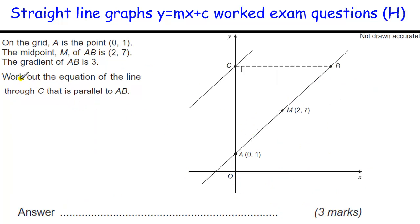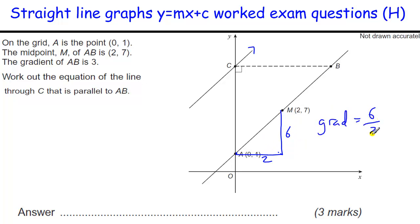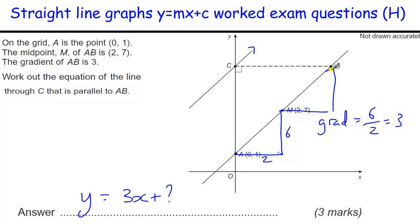Parallel lines. Work out the equation of the line through C that's parallel to AB. The gradient is going to be the same. Looking at the gradient of this line: going across from 0 to 2 and up from 1 to 7 is 6. So the gradient equals 6 over 2, which is 3. Our equation is going to be y equals 3x plus something. Going across another 2 and up 6 gives us 4 and 13. So it goes through 13, meaning the equation is y equals 3x plus 13.